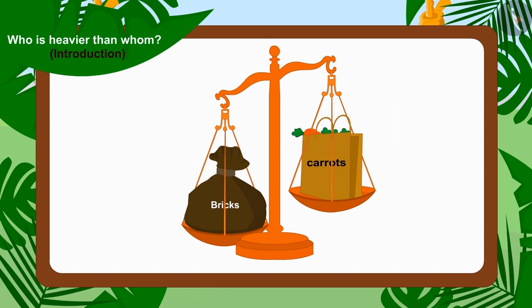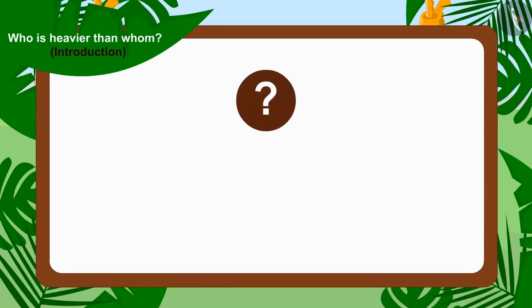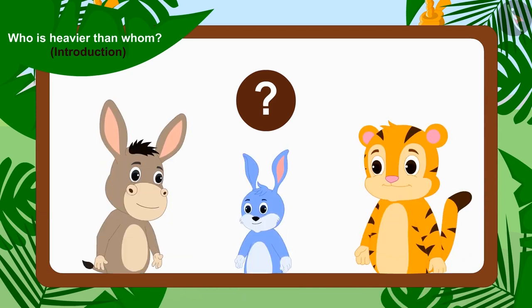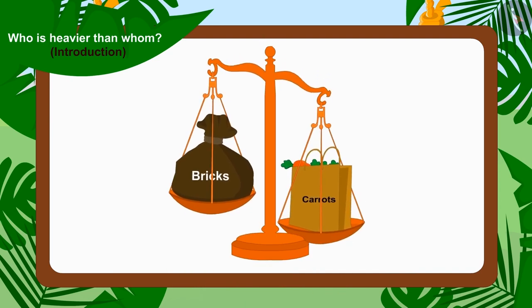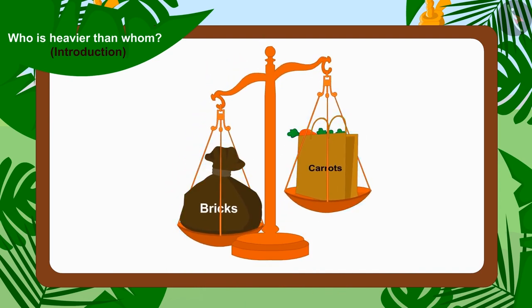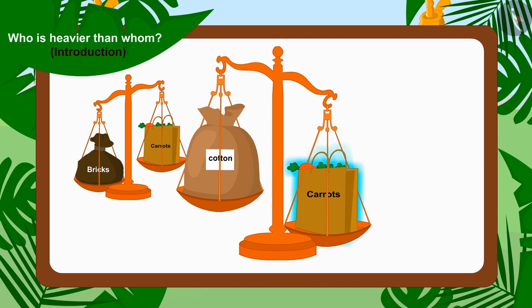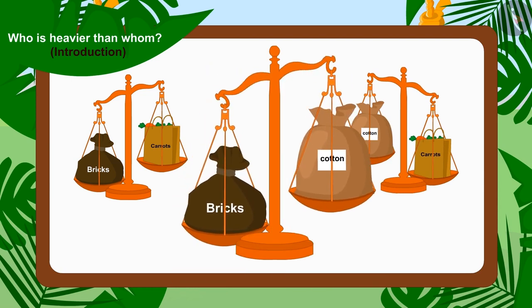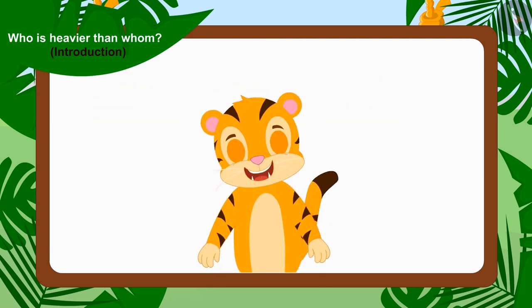So, the sack with Sher Khan's bricks is a lot heavier than Bunny's bag filled with carrots. Children, can you tell who will be the winner? Because the sack filled with Sher Khan's bricks is heavier than Bunny's bag filled with carrots, and Bunny's bag of carrots is heavier than Bhola's sack of cotton, therefore Sher Khan's sack filled with bricks is also heavier than Bhola's cotton sack. In this way, Sher Khan is the winner of this competition.